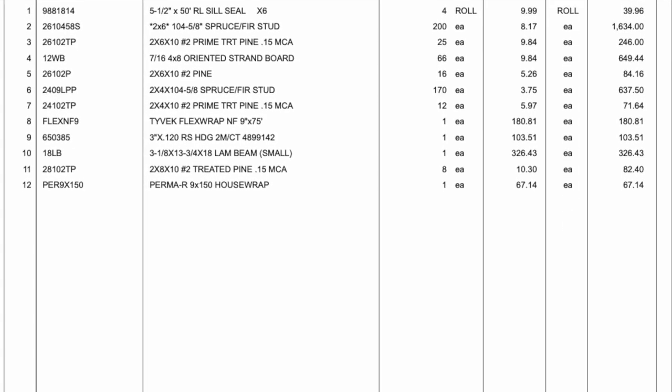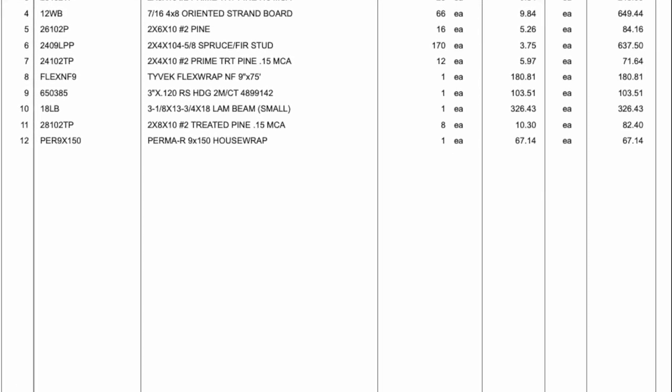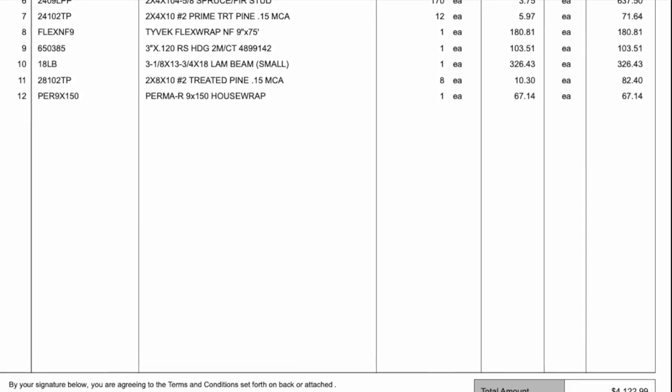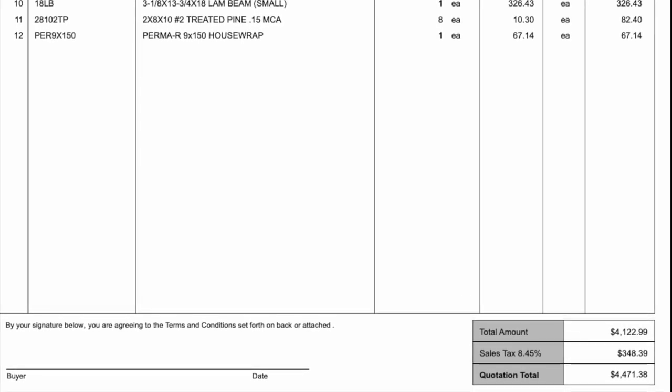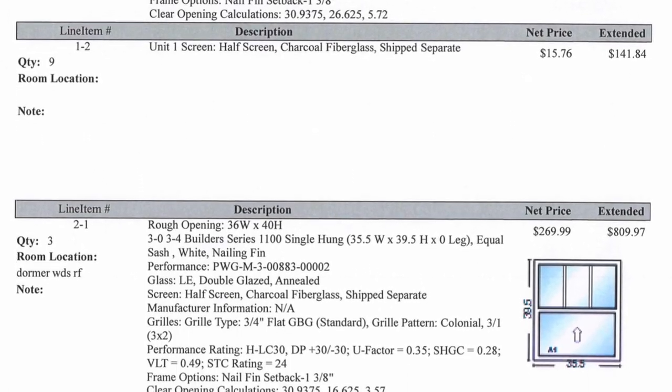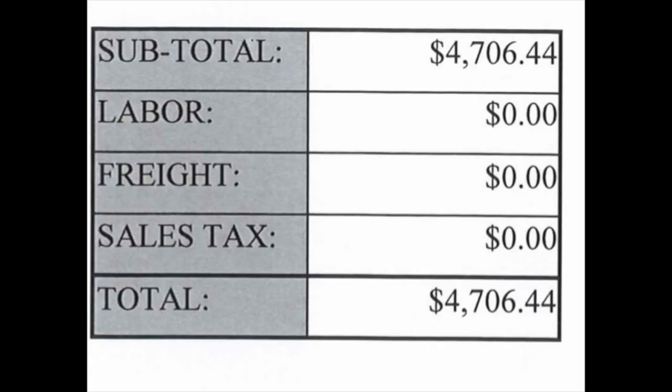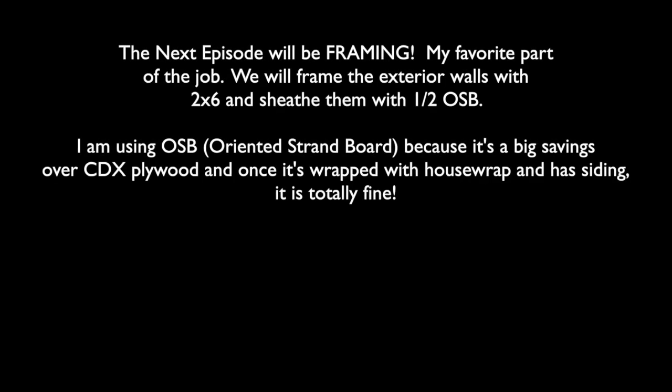To wrap up, I placed the order for all the material to build the walls, sheathing, plywood, house wrap, and a glue-laminated beam — about $4,471 to frame up the entire first floor. Windows for the entire house were ordered too since they take a while to come in, costing around $4,700. The next episode will cover framing the exterior walls with 2x6 studs, sheathed with half-inch OSB — chosen over CDX plywood because CDX is still expensive post-COVID and OSB works fine once you have house wrap and siding.